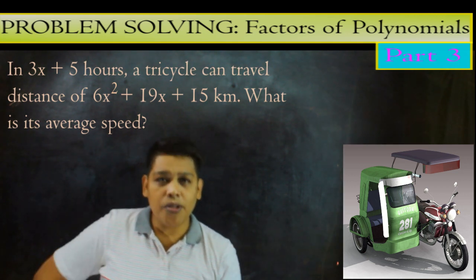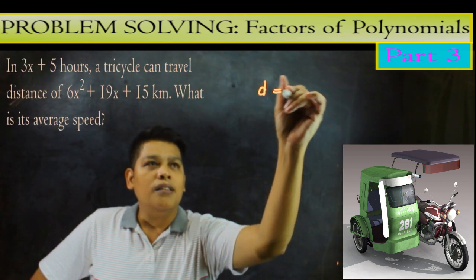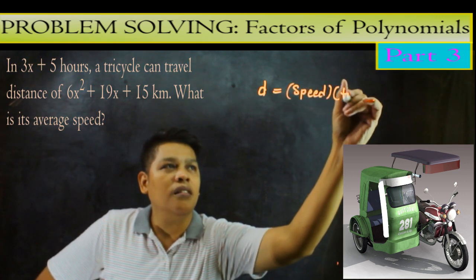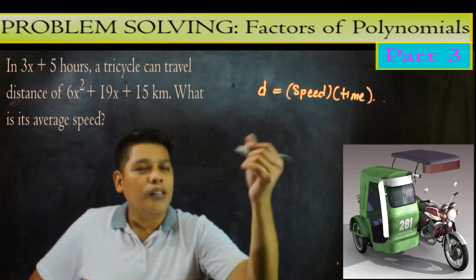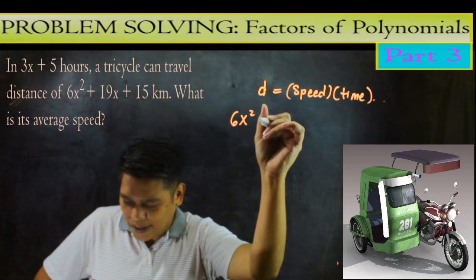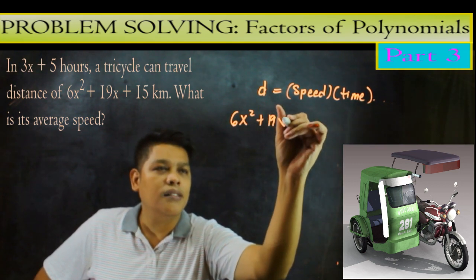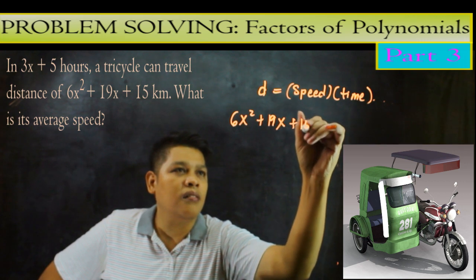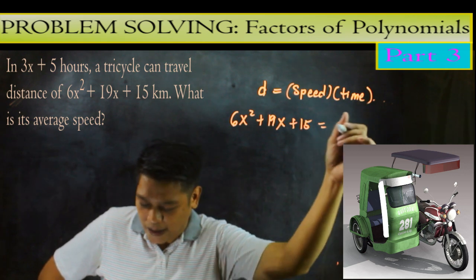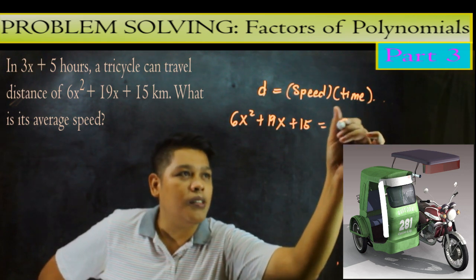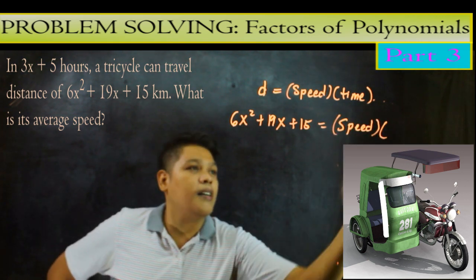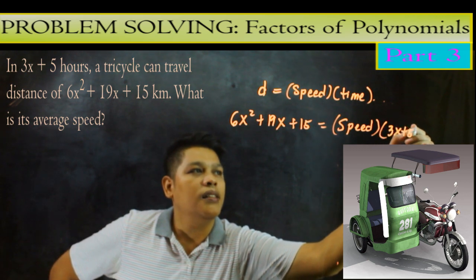So dahil ang distance natin is the 6x squared, ang bibigay na kayo dito na 6x squared plus 19x plus 15 and the time, is 3x plus 5. So isasabidot natin yan. So D is the speed times the time. So ang distance natin, na 6x squared plus 19x plus 15 equals, sa speed ang hinahanap natin. What is the speed? So yan yung ating hinahanap. So this is the speed and the time which is the 3x plus 5.